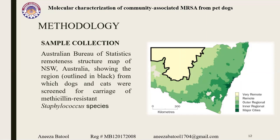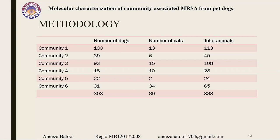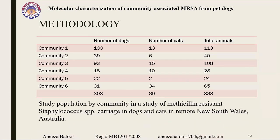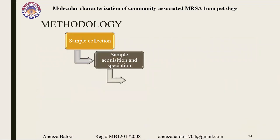Sample acquisition and speciation: samples were collected from six different communities — a total of 303 dogs and 80 cats, totaling 383 animals. Samples were collected from each animal using sterile cotton-tipped swabs at three anatomical sites. The first sample was taken from the anterior nares, which is the exterior portion of the nose.